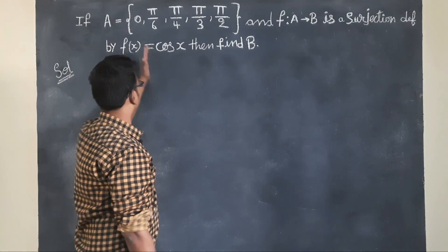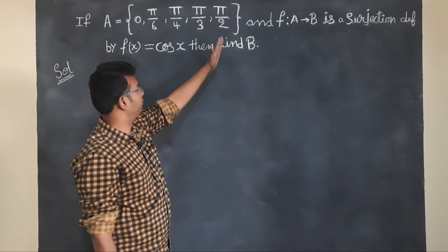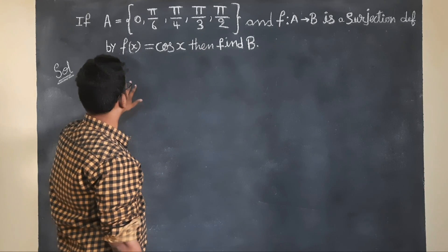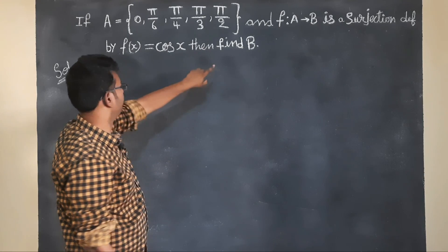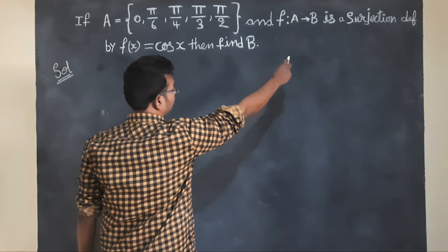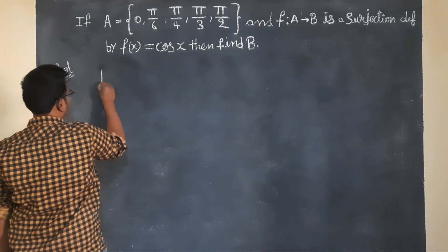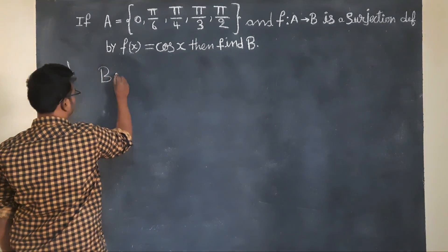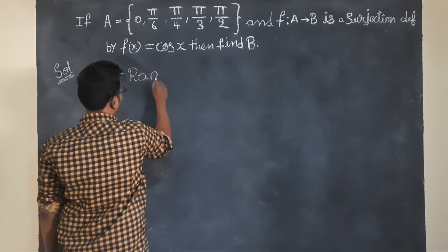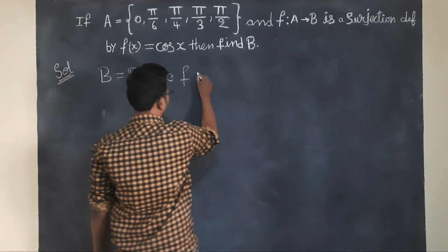So the A set is given as {0, π/6, π/4, π/3, π/2}. We need to find the B set. Since f: A to B is a surjection, B is equal to the range of f.